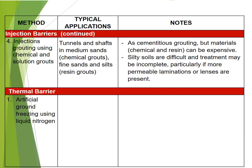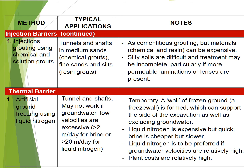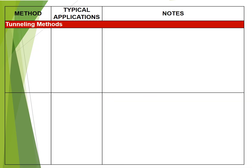Thermal barrier. 1. Artificial ground freezing using liquid nitrogen: used for tunnels and shafts. May not work if groundwater flow velocities are excessive — more than 2 metres per day for brine or more than 20 metres per day for liquid nitrogen. Temporary. A wall of frozen ground — a freeze wall — is formed, which can support the sides of the excavation as well as excluding groundwater. Liquid nitrogen is expensive but quick; brine is cheaper but slower. Liquid nitrogen is preferred if groundwater velocities are relatively high. Plant costs are relatively high.